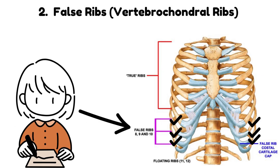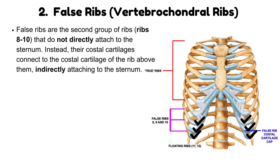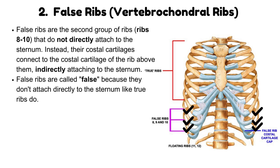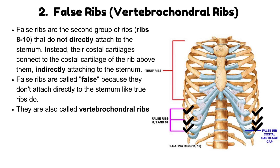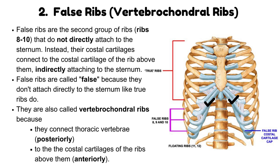False ribs — vertebrochondral ribs. False ribs are the second group of ribs, ribs 8 to 10, that do not directly attach to the sternum. Instead, their costal cartilages connect to the costal cartilage of the rib above them, thus indirectly attaching to the sternum. They are called false because they don't attach directly to the sternum like true ribs do. They are also called vertebrochondral ribs because they connect to the thoracic vertebrae posteriorly and to the costal cartilages of the ribs above them anteriorly.